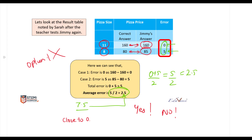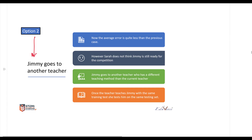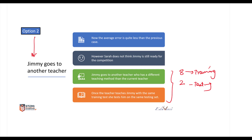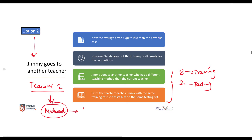In option number two, when Jimmy goes to another teacher, she decides to still use the same number of training datasets, which was eight, and the testing dataset was two. Let us call her teacher two for now. Teacher two will teach Jimmy using a new method of learning. With this new method of learning, can we see an improvement in Jimmy's practice test results? Let us go ahead and see.